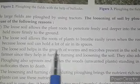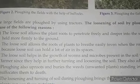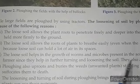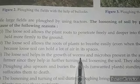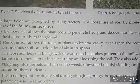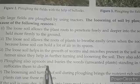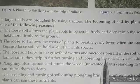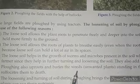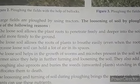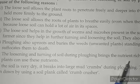Number three, loose soil helps the growth of worms and microbes present in the soil. These earthworms are the friends of the farmer as they help in further turning and loosening the soil. Number four, ploughing also uproots and exposes the weeds in the field, thereby causing them to die. Number five, the loosening and turning of soil during ploughing brings the nutrient-rich soil to the top so that the plants can use these nutrients.